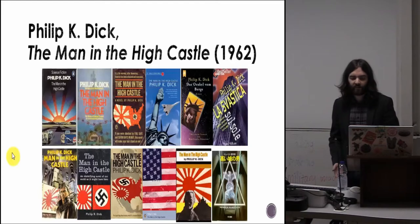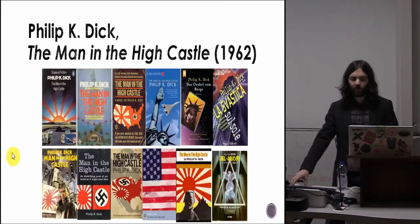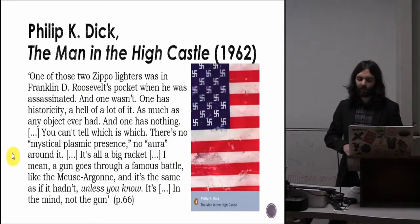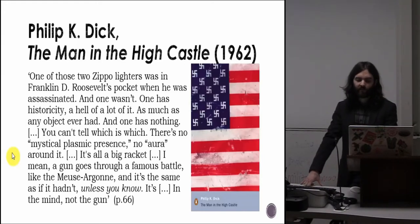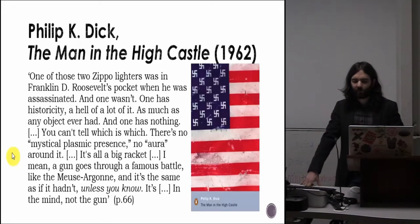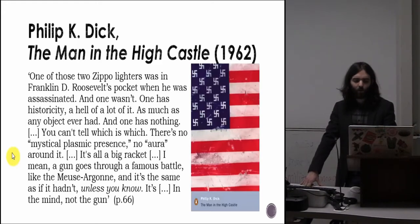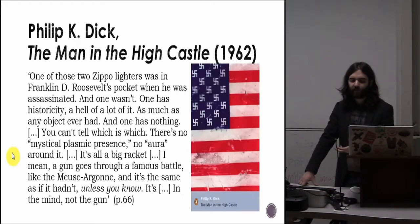A key theme of the novel is authenticity and duplication, best expressed by the character Wyndham Mason, who is a supplier of artifacts from pre-war independent America. In one scene, he compares two antique Zippo lighters with regards their historical importance and thus their value to collectors. One was in Franklin D. Roosevelt's pocket when he was assassinated, and one wasn't. 'One has historicity — a hell of a lot of it, as much as any object ever had — and one has nothing. You can't even tell which is which. There's no mystical plasmic presence, no aura about it. It's all a big racket. A gun goes through a famous battle like the Meuse-Argonne, and it's the same as if it hadn't — unless you know. It's in the mind, not the gun.'